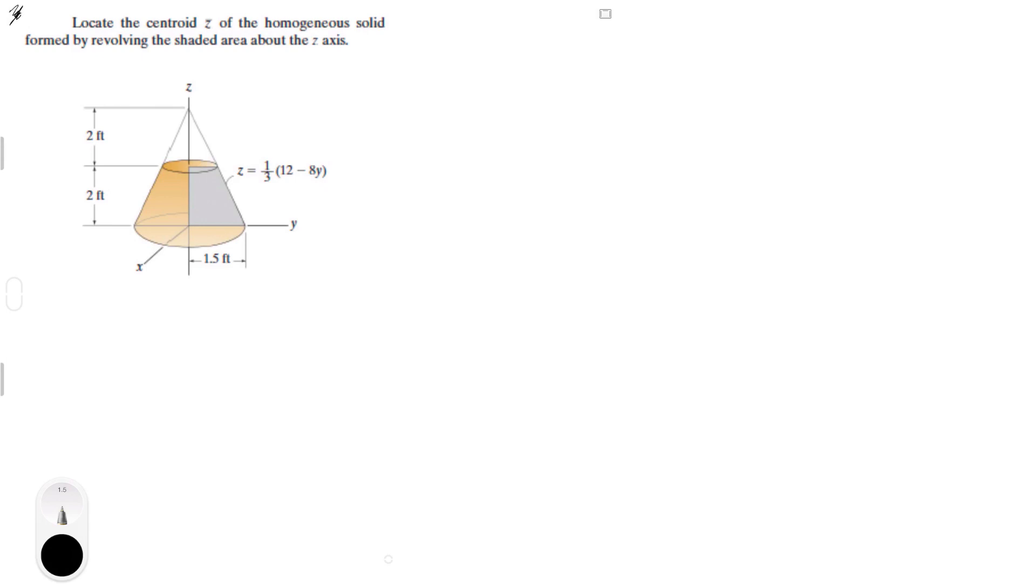Basically we know that the formula is C bar is equal to the integral of the area of C curly DA over the integral of the area DA. So, all we need to find is all the components of this equation to be able to plug them in and just solve them.